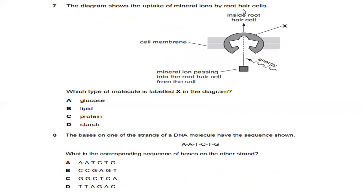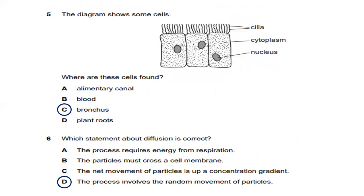Number seven. The diagram shows the uptake of mineral ions by root hair cells. Which type of molecule is labeled X in the diagram? So cell membrane you can see is at the top of the cell. Cell membranes also known as plasma membrane. So the cell components of water soluble protein, carbohydrate and other substances which is involved in cellular metabolism. So the nearest answer for this is protein.